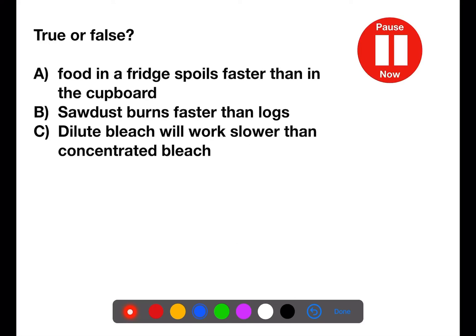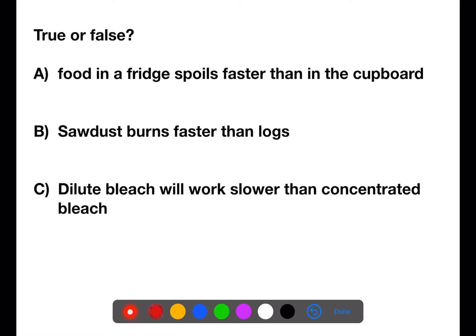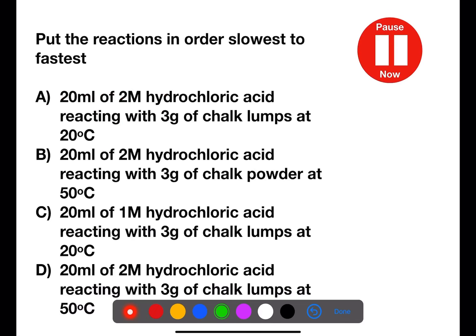Pause the video now and decide if each of these statements are true or false. Statement A is false — food in a fridge will be at a colder temperature and therefore the reaction will be slower. Statement B is true — sawdust has smaller particles and therefore a larger surface area than logs, so when burning it will burn faster. Statement C is also true — dilute bleach will have fewer bleach particles in a given volume and therefore will react slower than concentrated bleach.